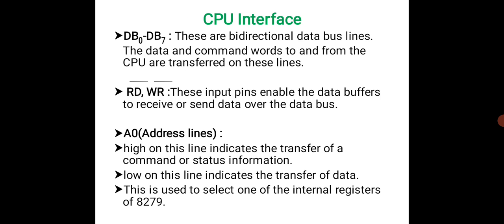DB0 to DB7 are bidirectional data bus lines. All data and command words are transferred on these lines. The read and write lines enable the data buffers to receive or send data over the data bus. Address line A0, when high, indicates transfer of command or status, and when low, indicates transfer of data.